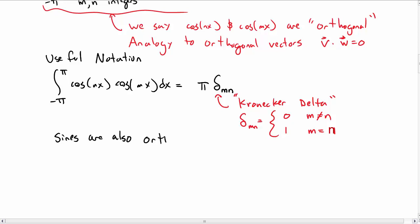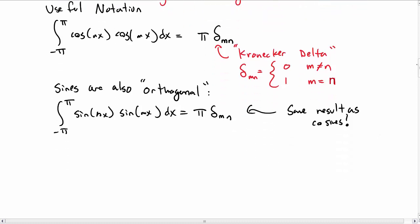The sines are also orthogonal. And so if you multiply sine of nx and sine of mx, integrate from negative π to π, then you also get π times δₘₙ. Interestingly enough, it's the same result as the cosines. Maybe that's not really surprising. Sines and cosines are really closely related to each other.